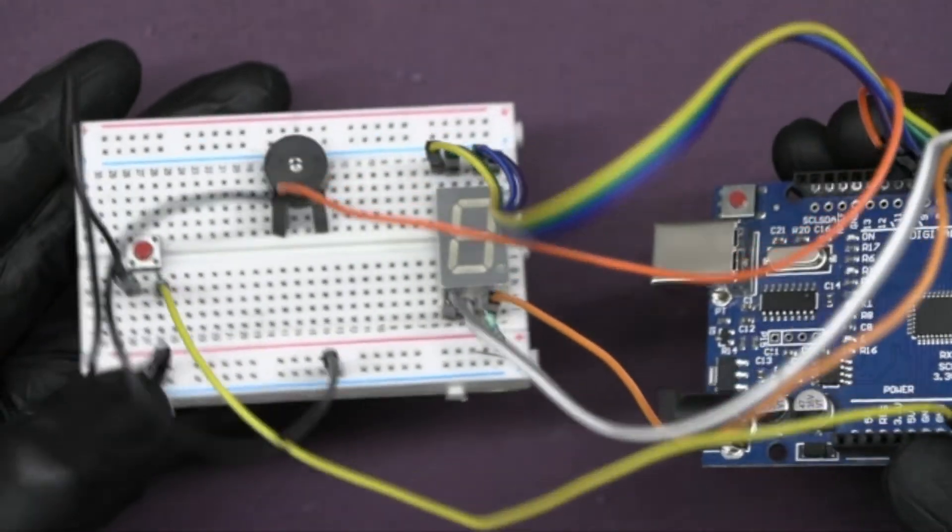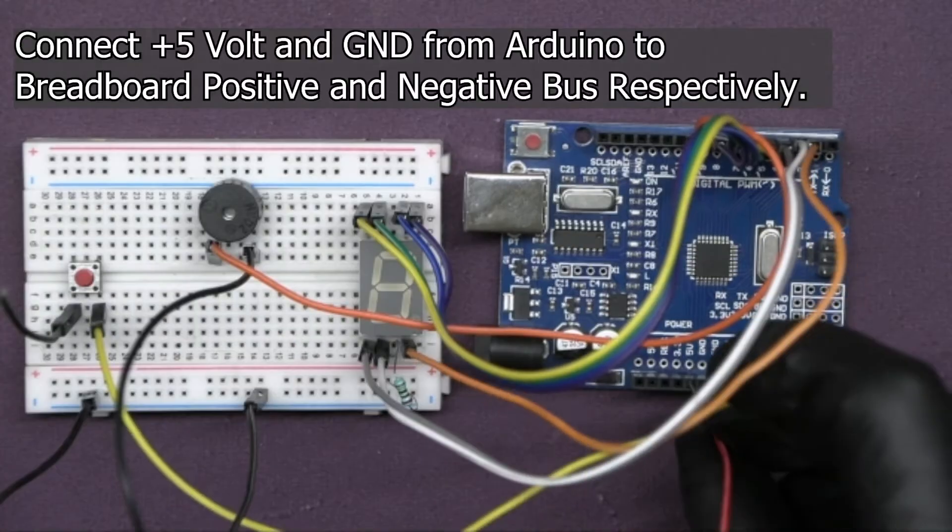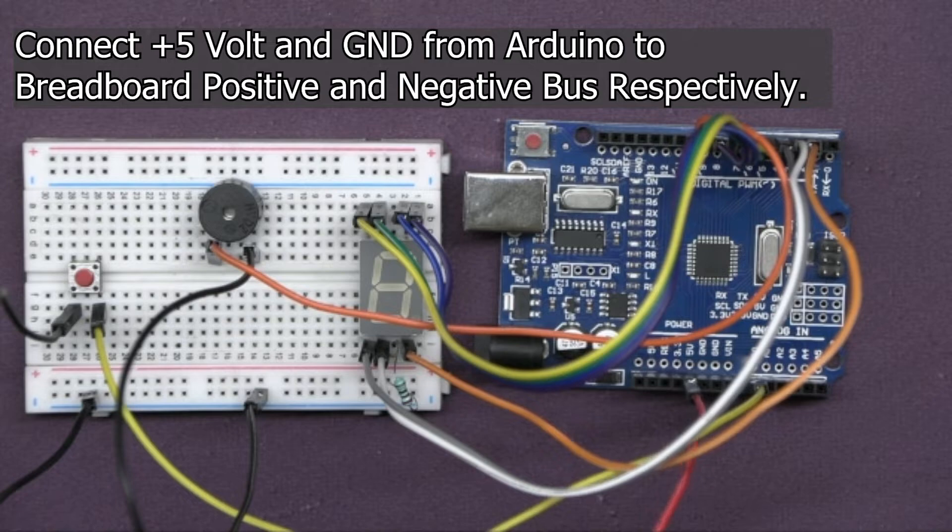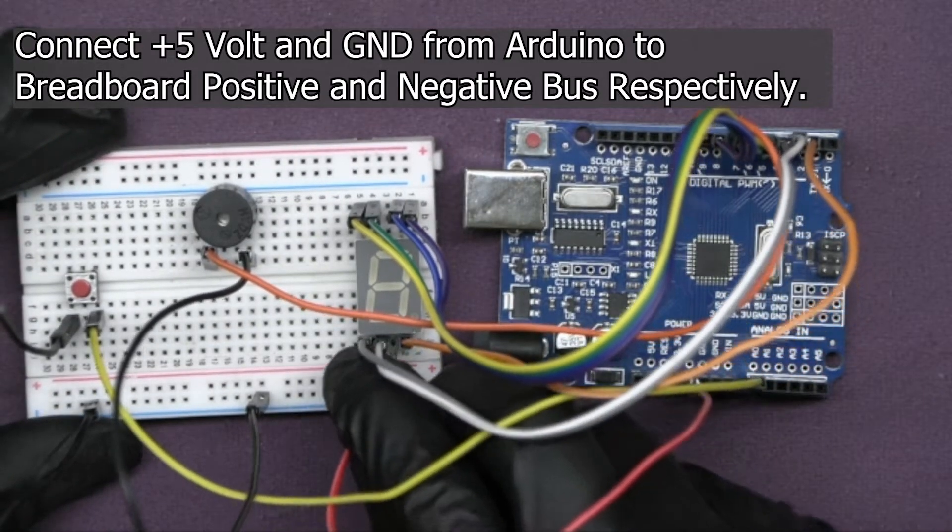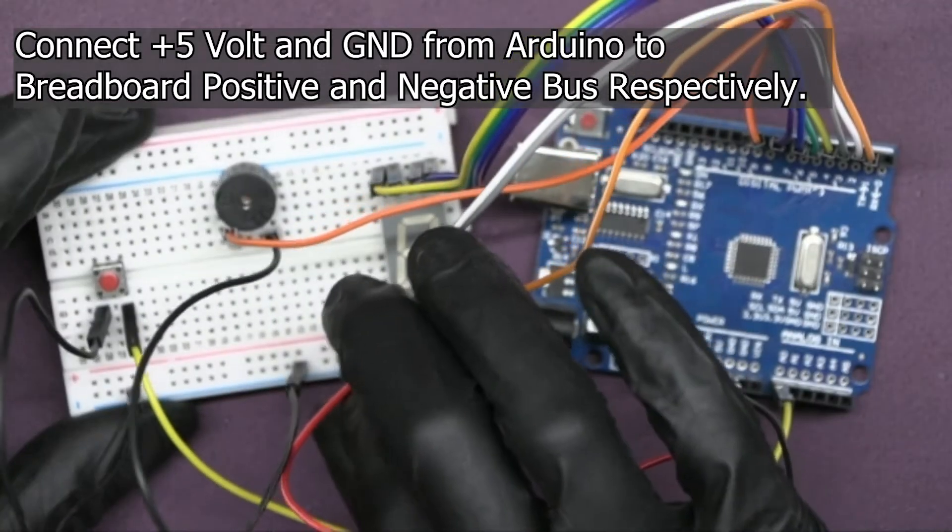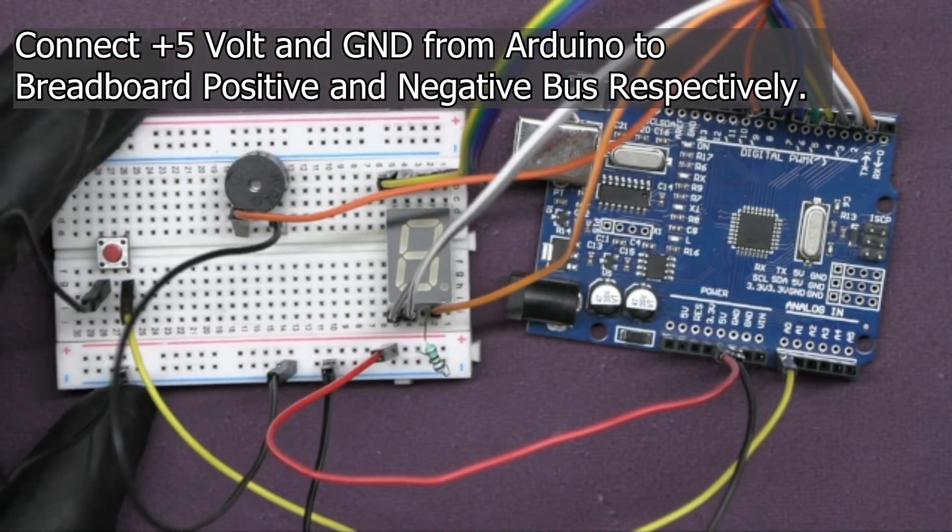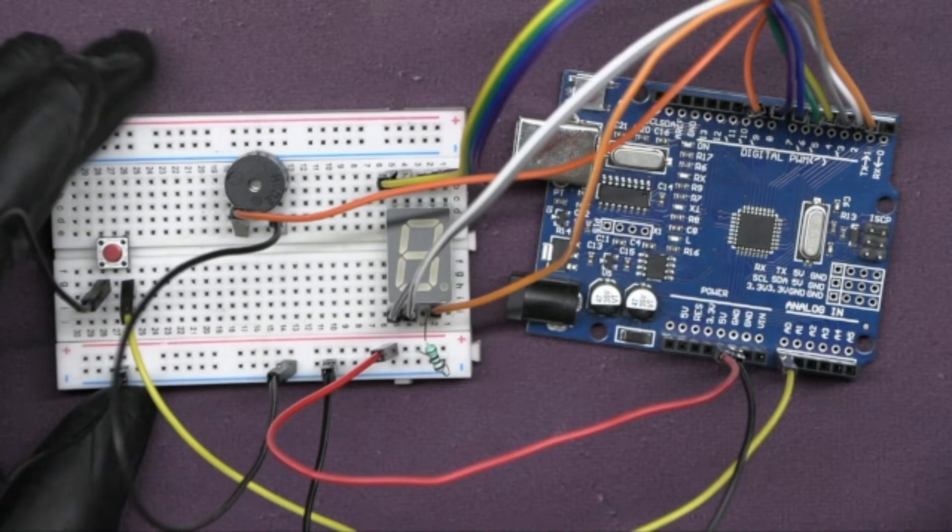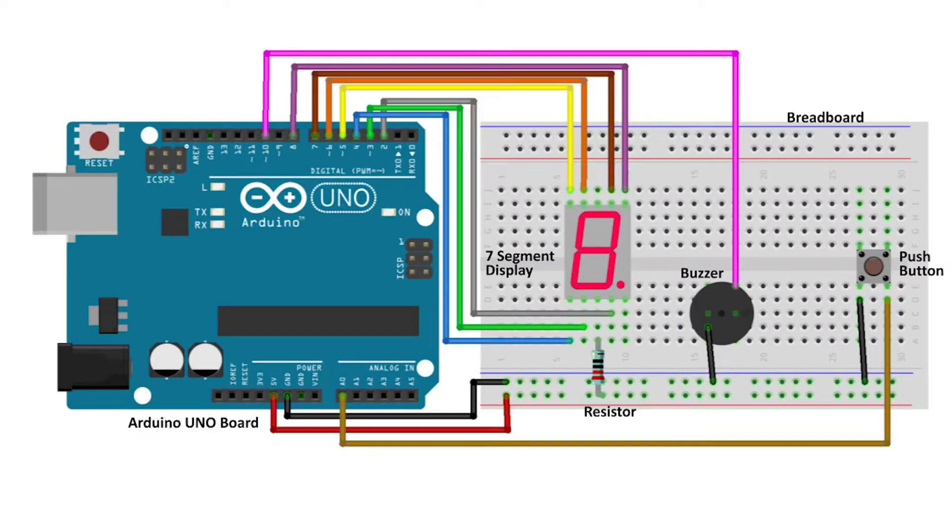Finally we need to power our circuit. Connect the 5 volts pin on the Arduino to the positive bus of the breadboard and the ground pin on the Arduino to the ground bus of the breadboard. With all the connections made, our circuit is complete. Verify the circuit according to the circuit diagram.